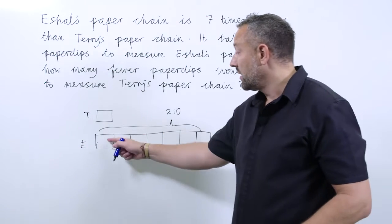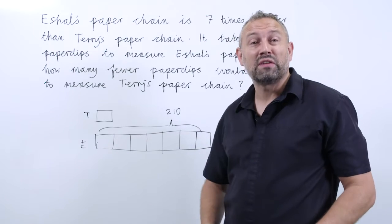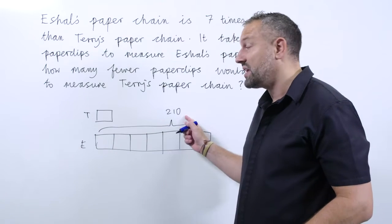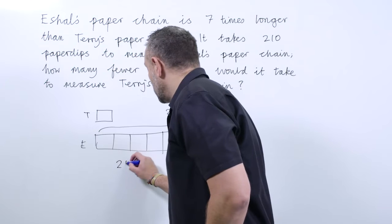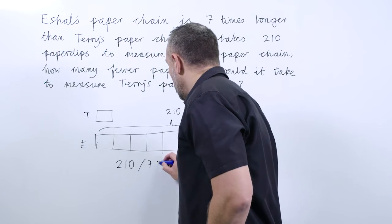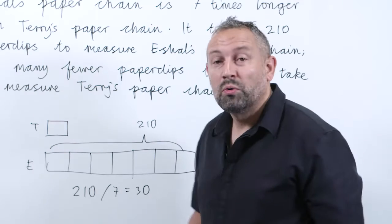From here, the children can see that if the whole is made of seven parts, we can do 210 divided by 7, which equals 30.